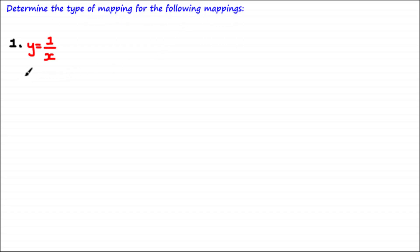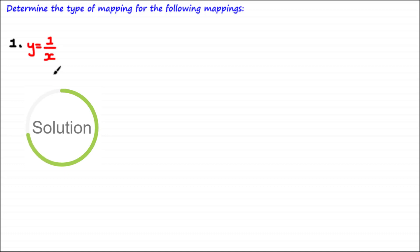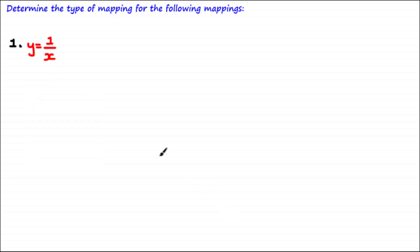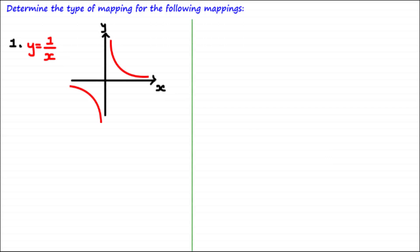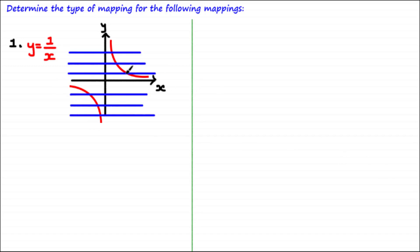Starting with question one, we're given the equation y = 1/x. The easiest way to figure out the type of mapping is by visualizing it — drawing its graph. Using the horizontal line test, you should be able to see that for each line you draw there's only one point of intersection between that line and the curve. Therefore, this is a one-to-one mapping.